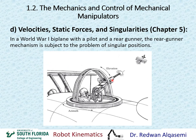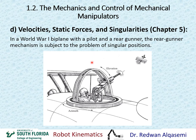Here's a small example on singularities: a World War I biplane with a pilot and a rear gunner. The rear gunner uses a mechanism with two degrees of freedom — elevation up and down, and azimuth rotating right and left. Imagine once the gun is pointing straight up vertically: at that moment, no matter how much you move the azimuth right or left, the gun still points upward. You are at a singularity — you've lost the azimuth degree of freedom. Singularities are not desirable, and we'll look in chapter five at how to avoid them.